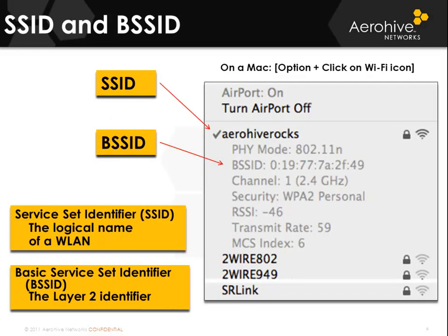The SSID is a logical name given to an infrastructure network or even an ad hoc network. The BSSID — the basic service set identifier — is the MAC address of the access point's radio being used with that SSID. If you are only using one SSID on your access point, the MAC address of the radio is normally the BSSID. When using multiple SSIDs from the same radio, the MAC address is skewed slightly — the last couple of digits are altered or incremented based on the SSID number.